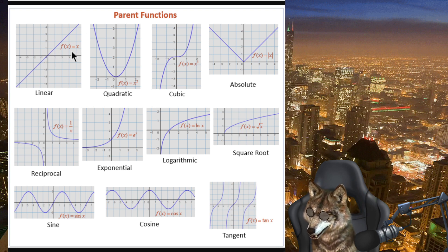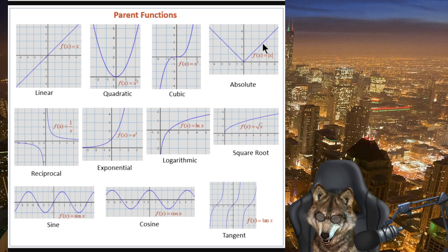Linear equations, your quadratics x squared, cubic is x to the third power, absolute meaning taking the absolute value of x gives you a different shape, reciprocal that's one over x, exponential e to the x, logarithmic that's the log or natural log of x, the square root which is actually x to the one half power, and then you have sine, cosine, and tangent functions down here.